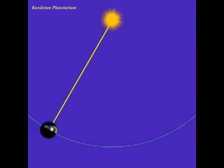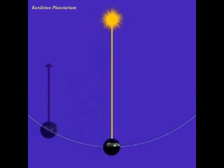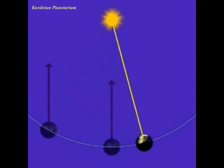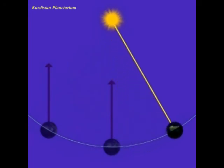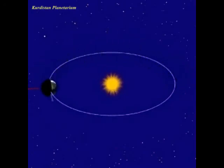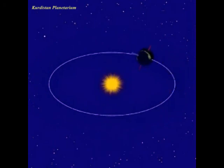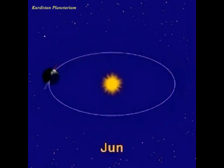A sidereal day is shorter than a standard solar day because of the Earth's daily travel along its orbit around the Sun. For the same reason, the stars visible at night change from season to season. The tilt of the Earth's rotation axis causes the seasonal changes in the duration of daylight and the weather.